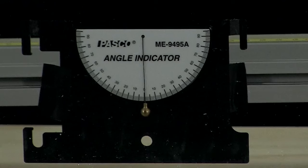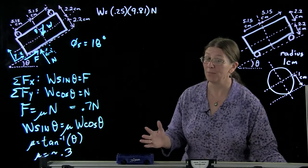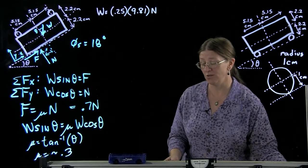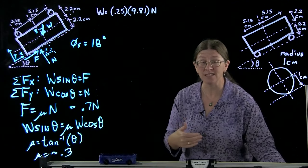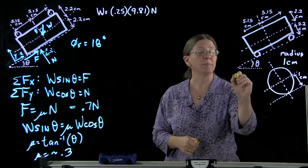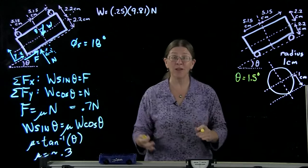So when I start lifting this track, I can get to maybe a degree, maybe a degree and a half before it goes. That's about it. I mean, you can barely see that. That's all it takes is about a degree or a degree and a half to make it go. So theta at this point is about one and a half degrees. Not very big.